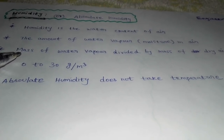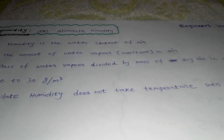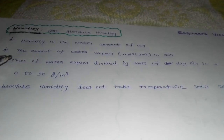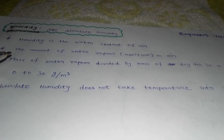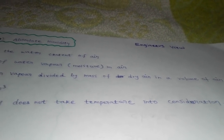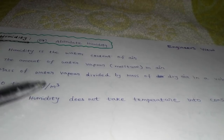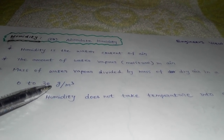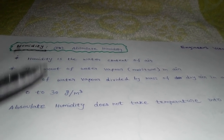Mass of water vapor divided by mass of dry air in the volume. In a room, there is water vapor. Water vapor is moisture, and that moisture is in dry air. The humidity range is 0 to 30 gram per meter cube. The humidity unit is gram per cubic meter. This humidity is called absolute humidity.